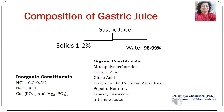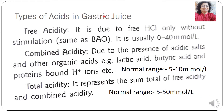The composition of gastric juice consists of solids. Before we proceed into the reactions given by gastric juice, let us look at the types of acidities seen in gastric juice. There are three types of acidities: free acidity, combined acidity, and total acidity.